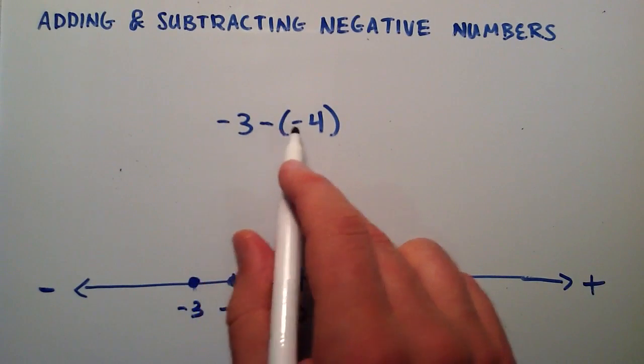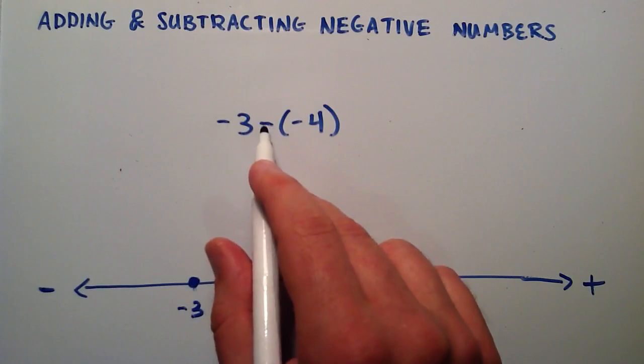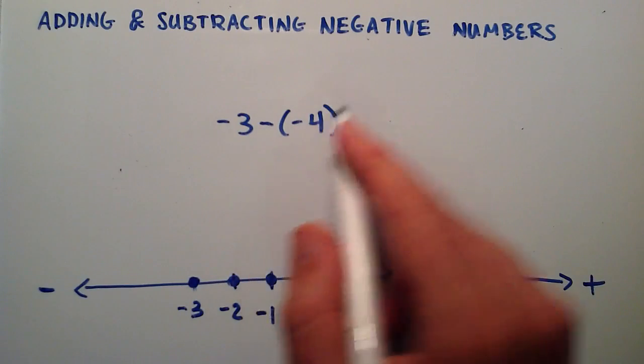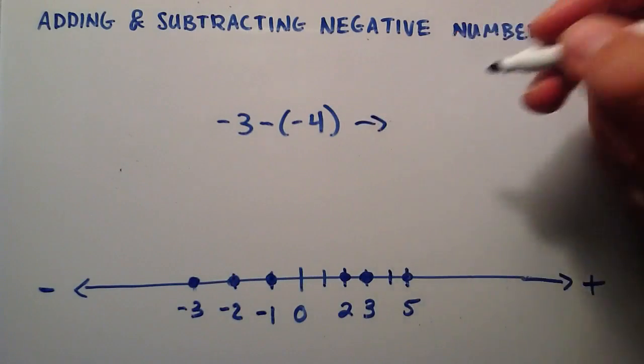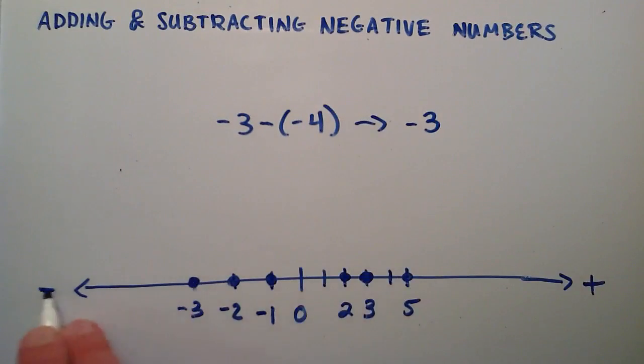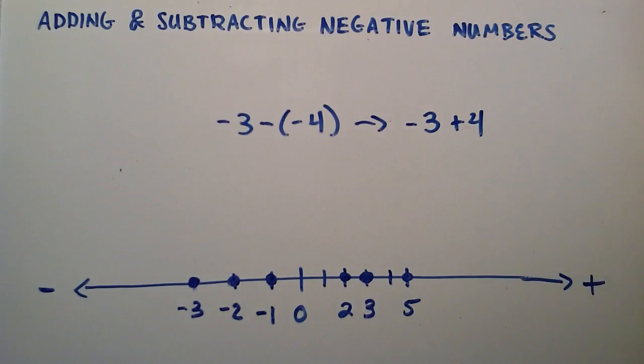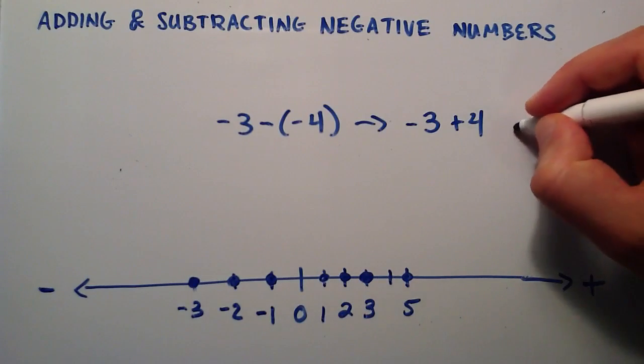And we're subtracting a negative 4. We're basically going the opposite direction of the negative direction. So that's the same thing as going in the positive direction. The opposite direction of the negative is the positive direction, so negative 3 plus 4. So we start at negative 3, and go up 1, 2, 3, 4 units. And that brings you to a positive 1.